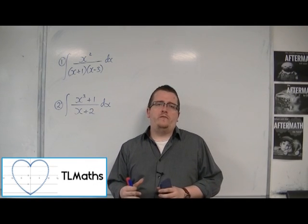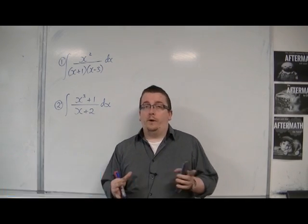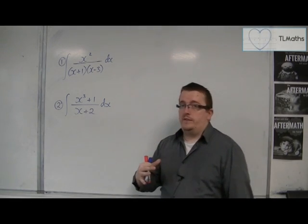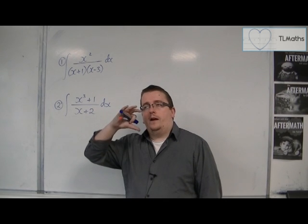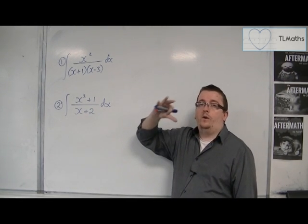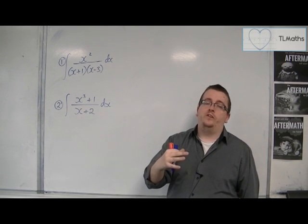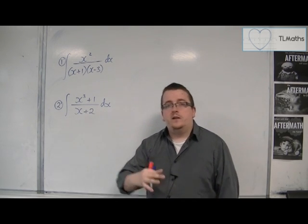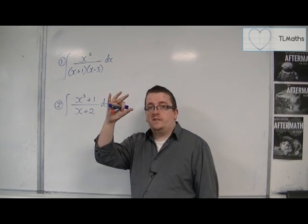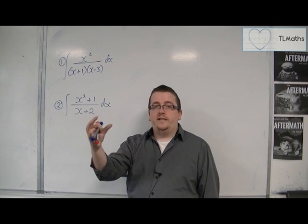In all of the examples that we've gone through for partial fractions, what we've had is that the numerator has been at least one power shy of the power on the denominator. So if you've got an x squared in the denominator, you will have either a constant term in the numerator or a linear term.